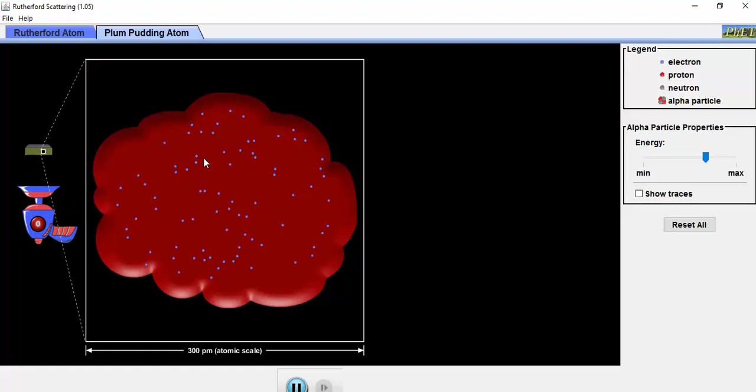If a particle comes charging in there, there's really no preference about where it might go. It'll just go blasting through. If I put some particles in the plum pudding model, these alpha particles coming up are going straight through. They're not deflecting very much at all. I can give them a lot of energy or make them go really slow, and they don't seem to change much.